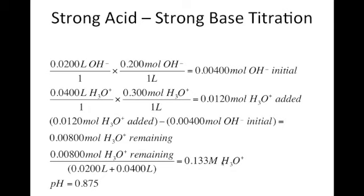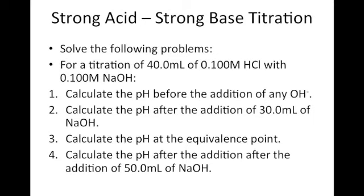Taking the negative log of 0.133 M gives a very acidic pH of 0.875, which is expected since we're well past the equivalence point. That's how we calculate the pH at four key points in a strong acid/strong base titration: before acid is added, after some acid but before the equivalence point, at the equivalence point, and beyond the equivalence point.